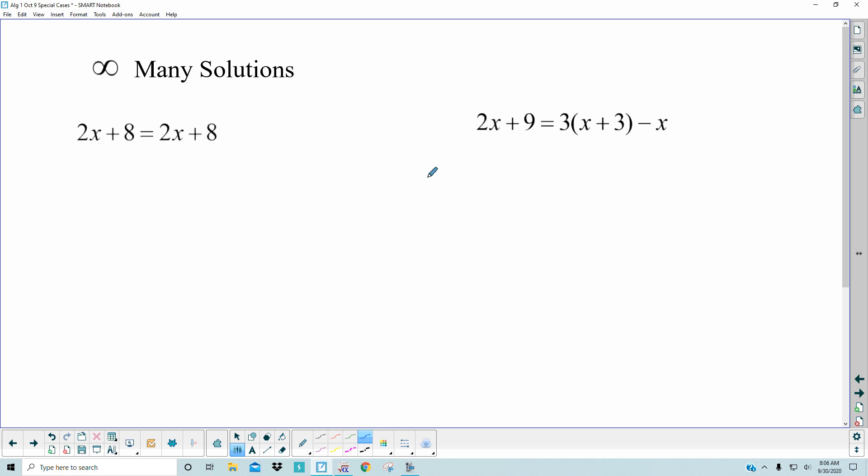Now, coming over to this infinitely many solutions, I want to know what would that mean? Well, how about if I start by subtracting the 2x from both sides? You're left with 8 equals 8. Well, how often is that true? Always. It's always true. So what does that mean? Well, let's try.